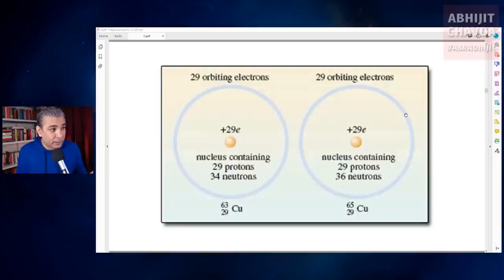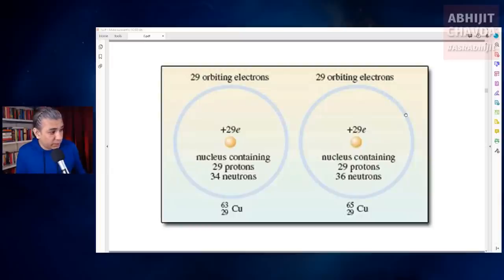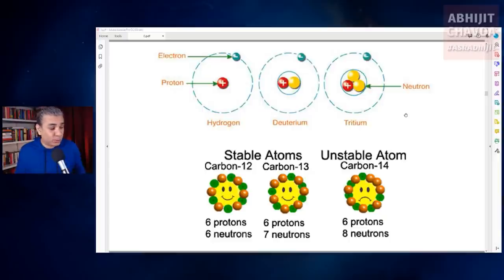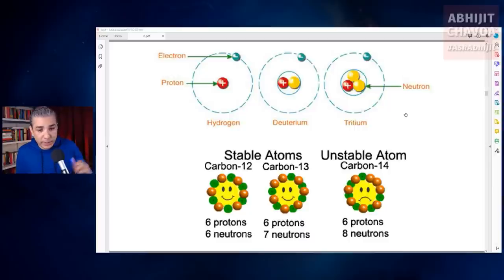Some atoms have extra neutrons. For example, some copper atoms have 34 neutrons and some have 36 neutrons. Atoms with the same number of protons but a different number of neutrons are called isotopes. Hydrogen has three isotopes: protium, deuterium, and tritium. Carbon has three isotopes: carbon-12, carbon-13, and carbon-14.